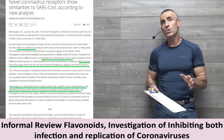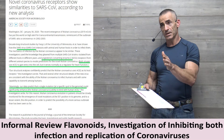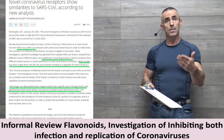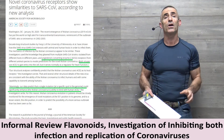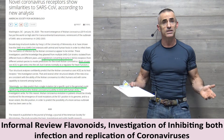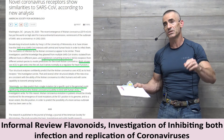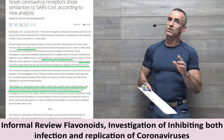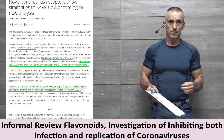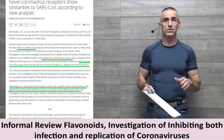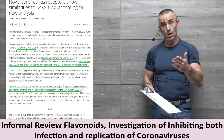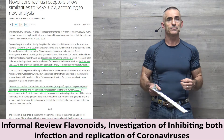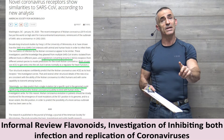In a previous video on quercetin, we found it had a unique effect of dropping blood pressure by acting on the angiotensin converting enzyme. The pathway that both SARS-CoV and MERS — and now also COVID-19 — use is ACE2. That's where we begin.